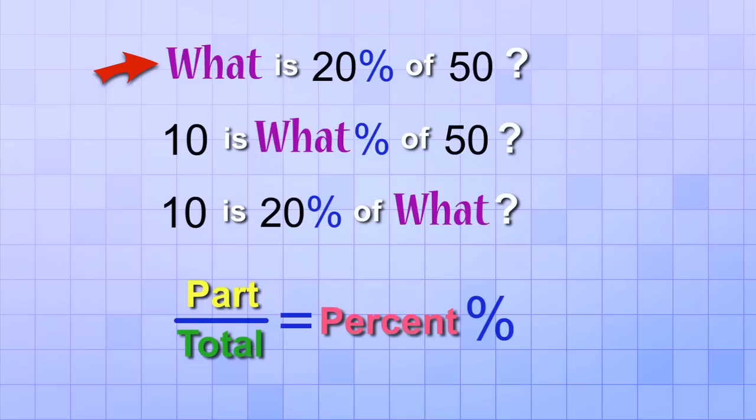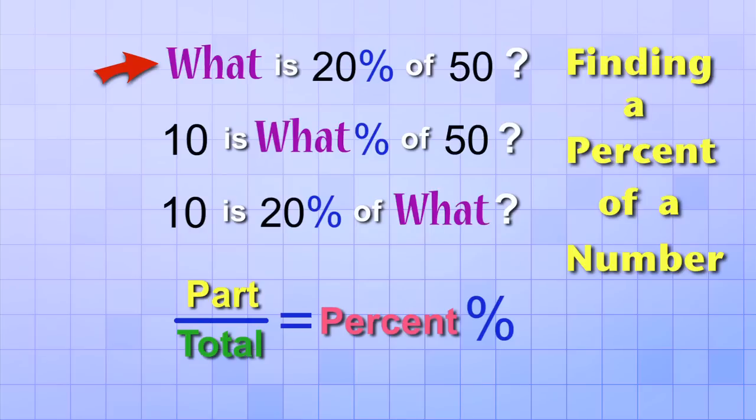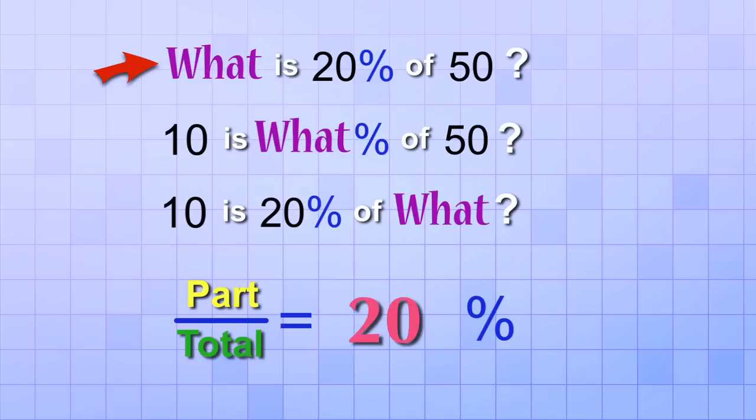The first type is what we learned in the last video, finding a percent of a number. In this type of problem, we know the percent, and we know the total, but we don't know what part of that total we have. The second type of problem is what we're going to learn in this video.